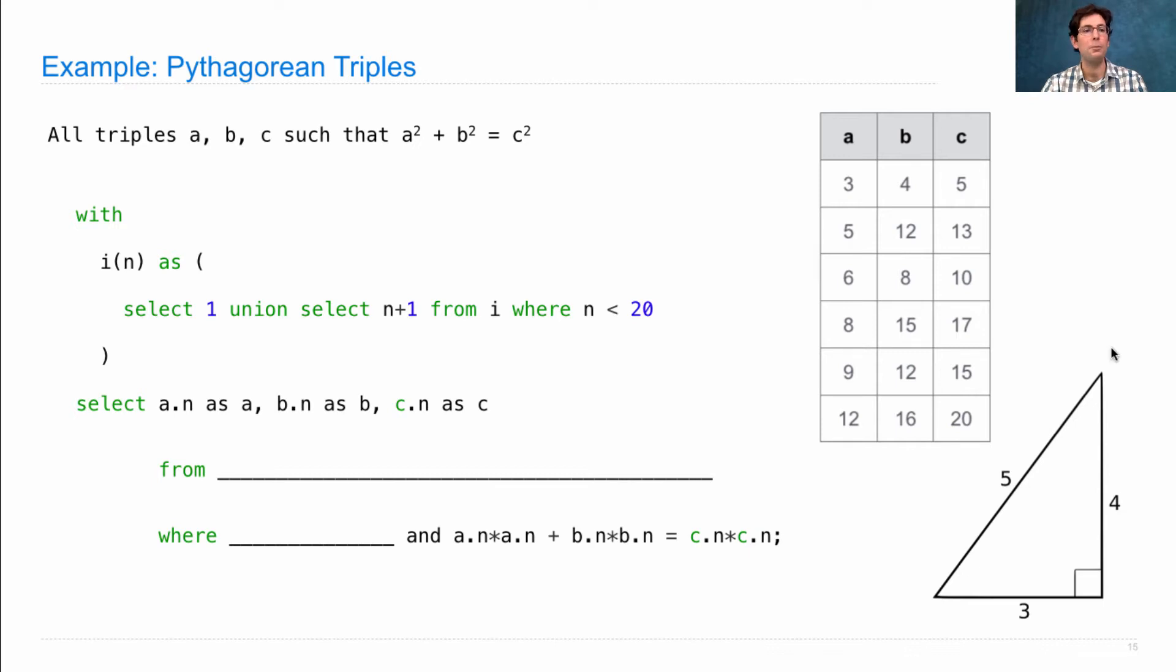How would we do that? Well, we would say with i, n as select 1, union, select n plus 1 from i where n is less than 20. So this just gives the integers from 1 up to 20. We want to select three columns, a.n, b.n, and c.n,